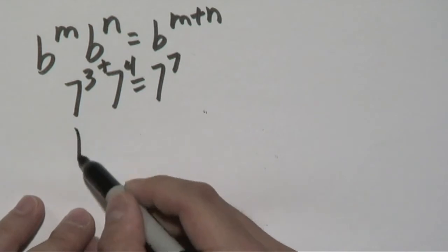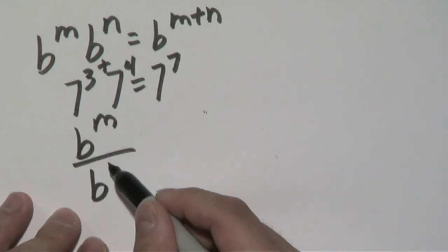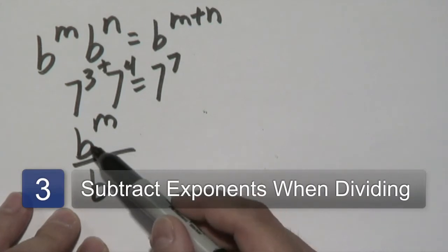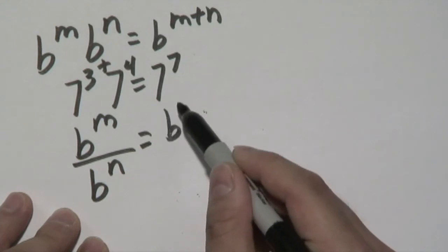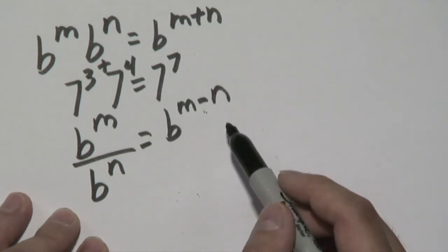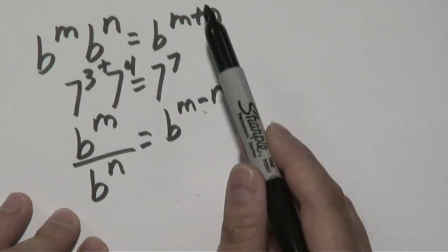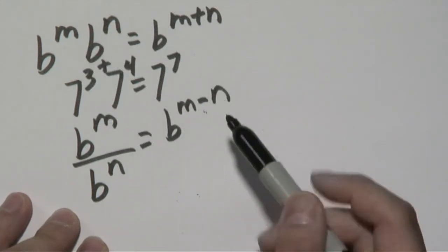Now another property is if you have b to an exponent divided by b of a different exponent, again, making sure the bases match, because if they don't, we cannot use this property, you will have b to the m minus n. You can subtract those exponents. So if multiplication is associated with addition of exponents, then division will be associated with subtraction.